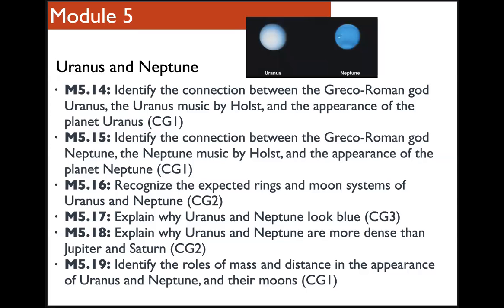So we'll now approach Uranus and Neptune with the same thought process that we used to approach Jupiter and Saturn. By comparing the planet to the original god it was named after to the music, we'll figure out why the planets were given those names associated with the gods. And that's going to be associated with the way the planets look, the appearance. And that idea of how they appear is going to be something that we're going to be able to expect.